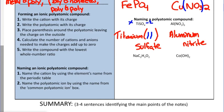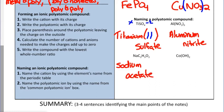For NaC2H3O2: we have four capital letters, which means a polyatomic is involved. I call this the 'nacho compound' because it looks like NACHO. There are no parentheses, so there's only one C2H3O2 ion. Sodium is always plus one by location in the periodic table, so we write its full name without Roman numerals. The name for this last group is acetate, so this compound is sodium acetate.